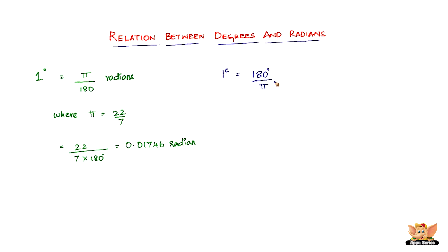You can leave it like this, or you can substitute again. In this case, π equals 22 by 7.